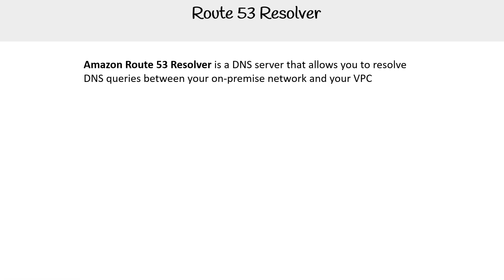Amazon Route 53 Resolver is a DNS server that allows you to resolve DNS queries between your on-premise network and your VPC.